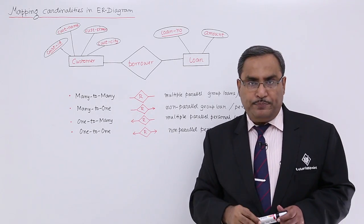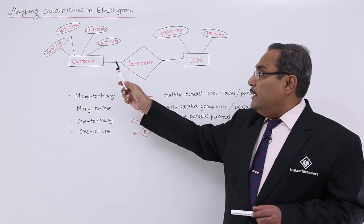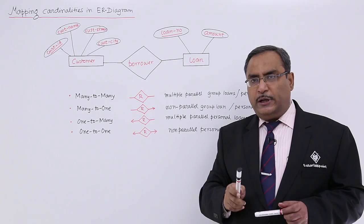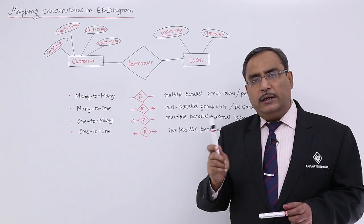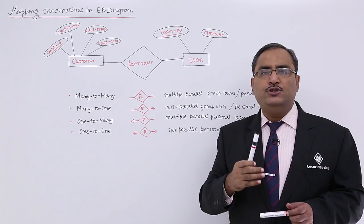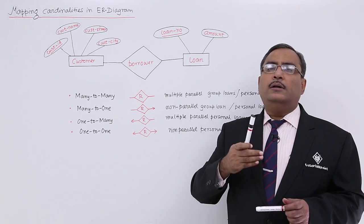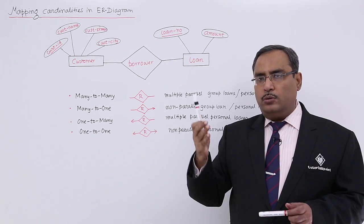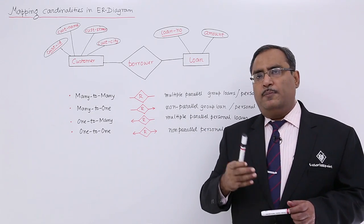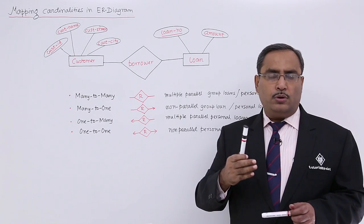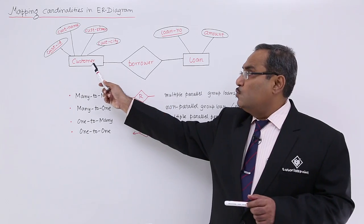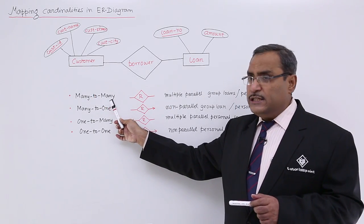Many-to-many means against one Customer ID, we have multiple Loan IDs. That means this particular bank issues multiple parallel loans — a customer can enjoy multiple loans at the same time. For example, one house loan, one educational loan, one property loan or mortgage loan. In this way, multiple loans are issued against one customer.